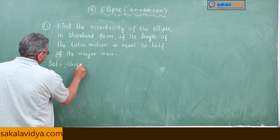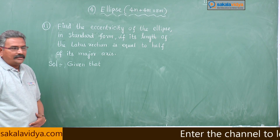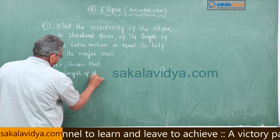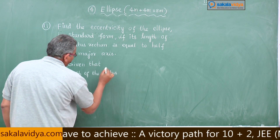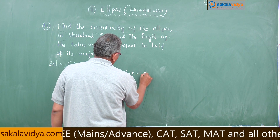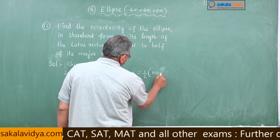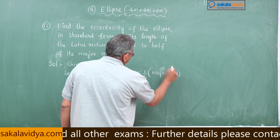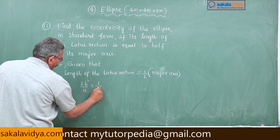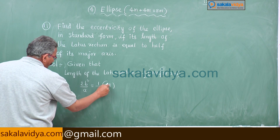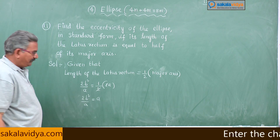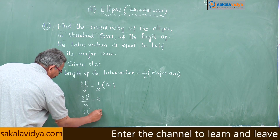Given that the length of the latus rectum is equal to half times the major axis. The length of the latus rectum is 2b²/a, which equals (1/2)·2a. The 2's cancel, giving 2b²/a = a. Cross-multiplying: 2b² = a². Call this equation 1.